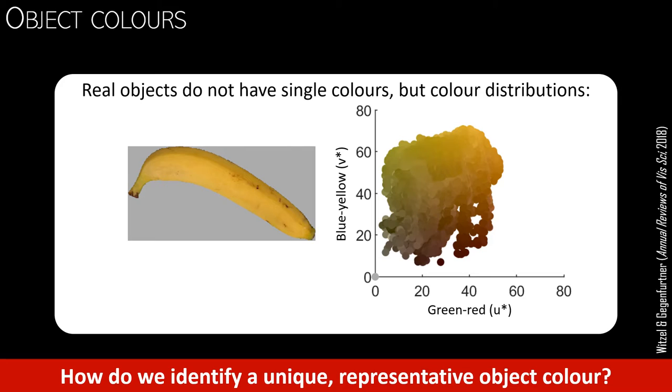The question is now, how do we identify a unique color that we consider to be representative and typical for the object, such as the typical yellow of a banana?